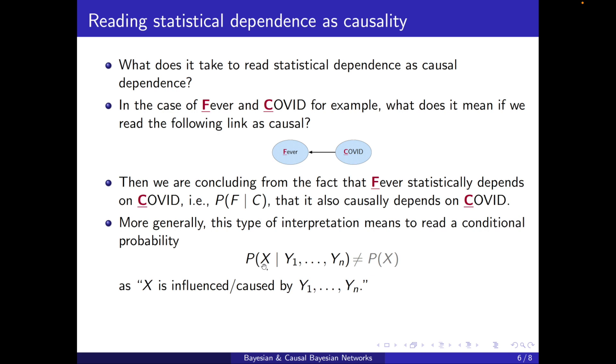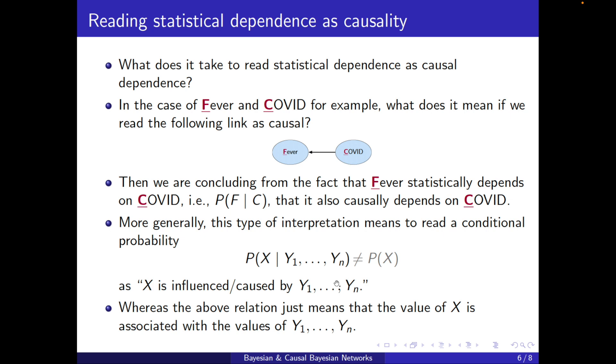But we know that the above relation just means that the value of X is associated with the values of Y1 to Yn. Sometimes we could just write down the opposite as well, like P(Y1,...,Yn|X) wouldn't equal P(Y1,...,Yn). So this does not mean causality.